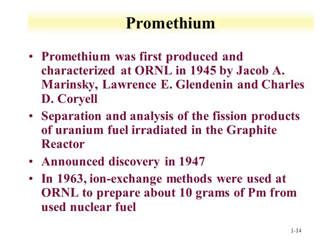Promethium, another radio element lighter than bismuth, was first produced in 1945 at Oak Ridge National Laboratory from fission products of uranium fuel in the graphite reactor. The discovery was announced two years later due to secrecy concerns. In the early 1960s, Oak Ridge prepared about 10 grams of promethium from used nuclear fuel via ion exchange — a significant amount of activity given its short half-life.